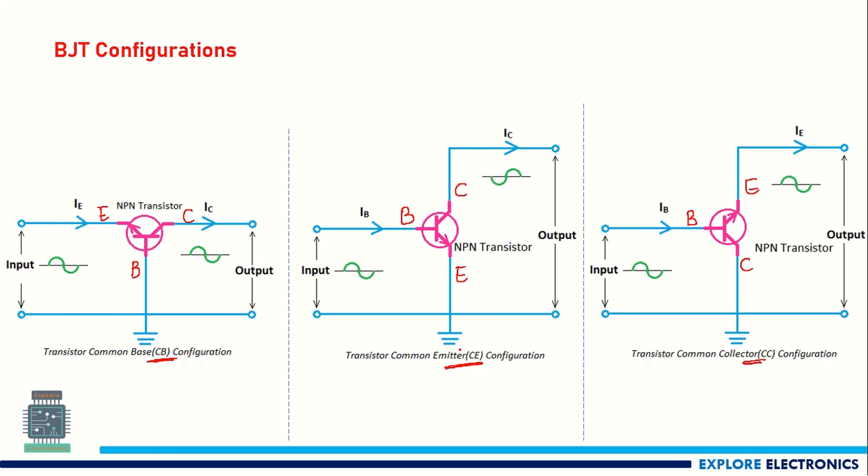The most reliable and preferable configuration is the common emitter configuration, and this common emitter configuration circuit will be used for the analysis of different biasing methods.